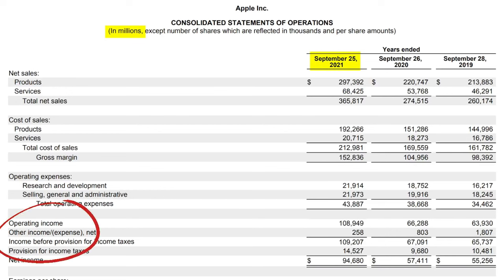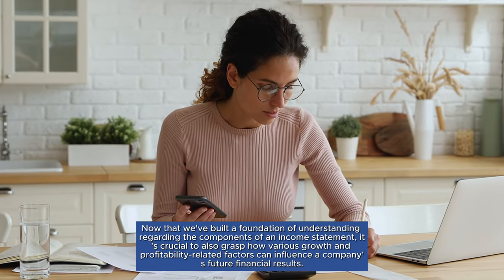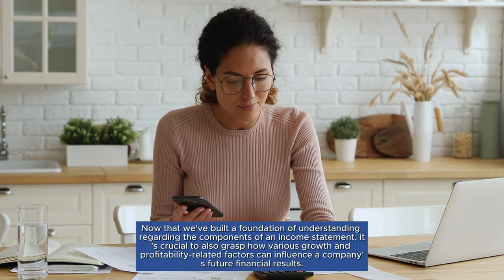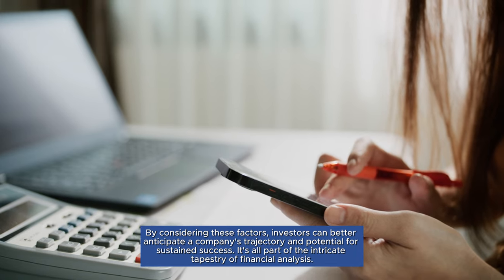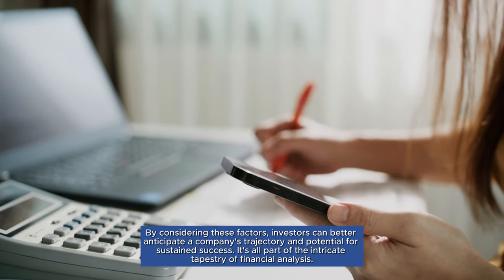Moving on to Other Income and Expenses: these encompass income and expenses that fall outside the realm of a company's normal day-to-day operations. For instance, if Apple made a successful investment in a tech startup, any income generated from that investment would typically be included in this category. Following that, we arrive at Earnings Before Taxes — the company's profit before accounting for taxes. Subtracting taxes yields the final figure known as Net Income, which is the number most people think of when discussing a company's profit.